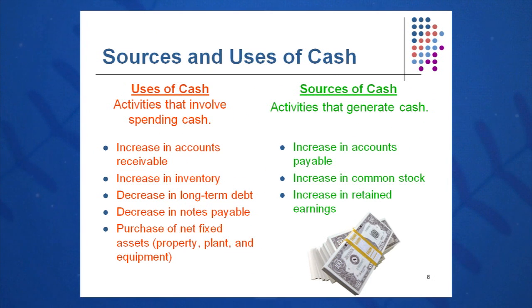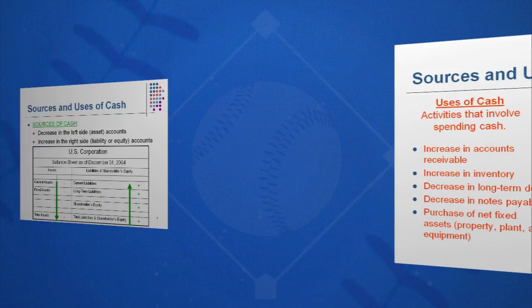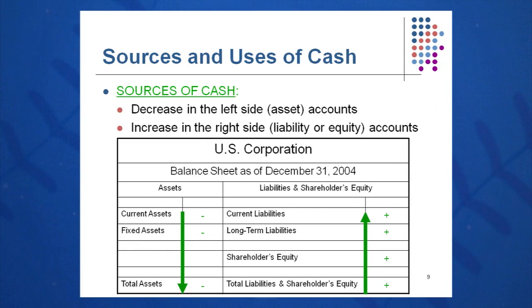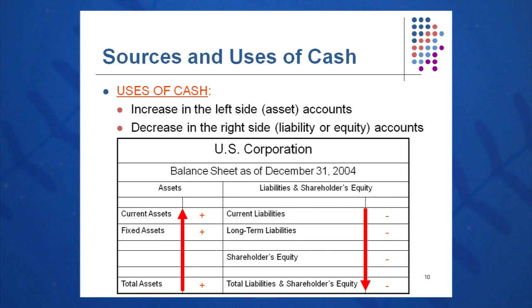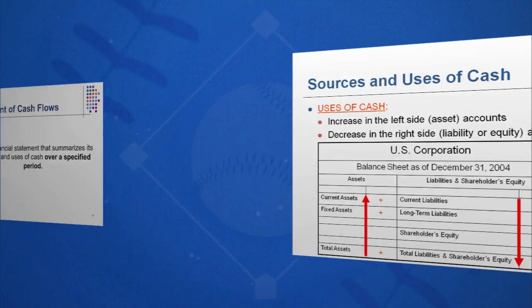In general, uses of cash are activities that involve spending cash, and sources of cash generate cash. We're going to look for mnemonics to understand what is a use of cash and what is a source of cash. This slide depicts it very well. A source of cash is a left-side balance sheet item going down, or a right-side balance sheet item going up. For instance, if current liabilities go up, that means there are unpaid bills — that's a source of cash. If inventory goes down, that means you sold inventory — also a source of cash. Uses of cash are the opposite: left-side balance sheet item up, or right-side balance sheet item down.